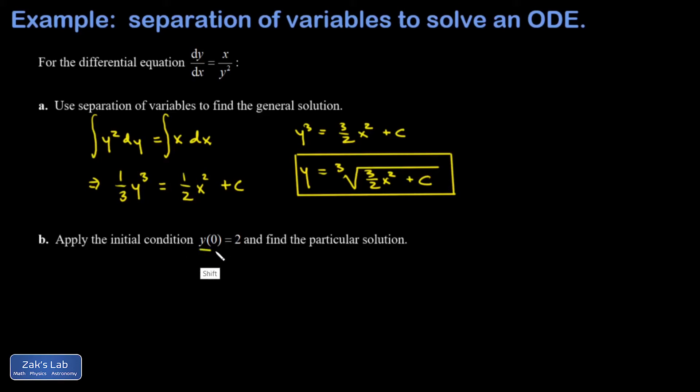Our initial condition is that y of zero should equal two. So when I replace x with zero, I should get y equals two. I plug in y equals two when x equals zero.